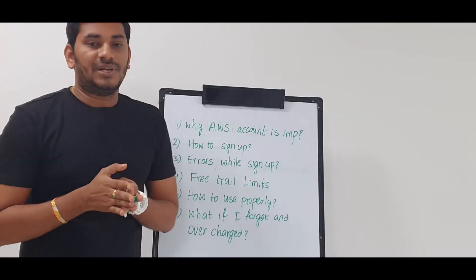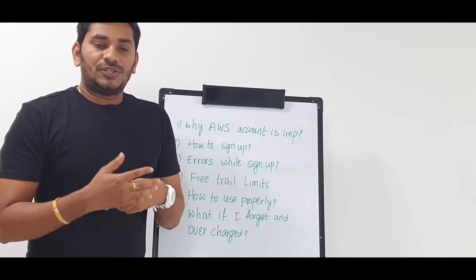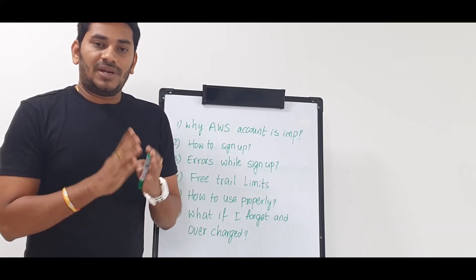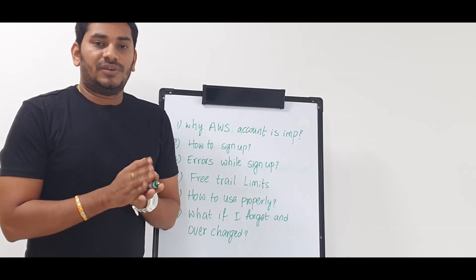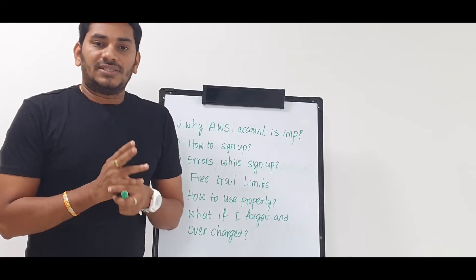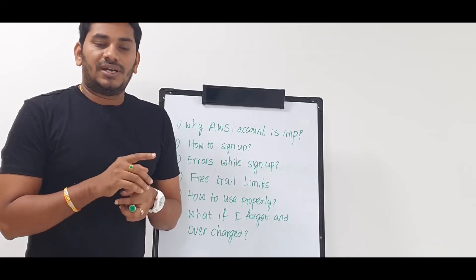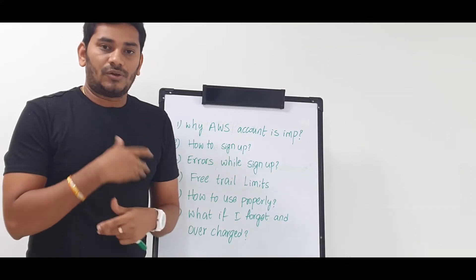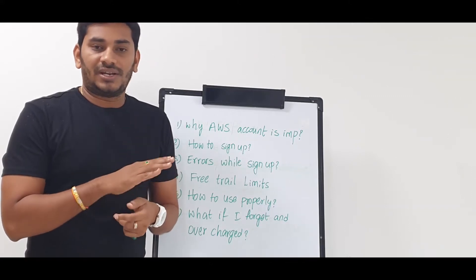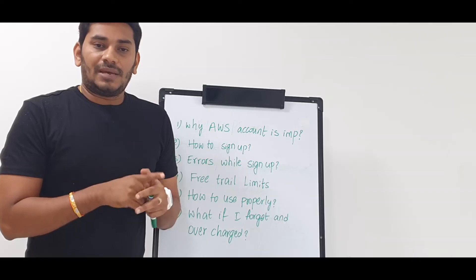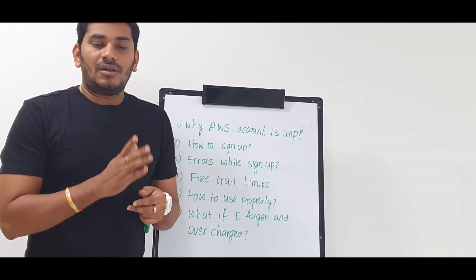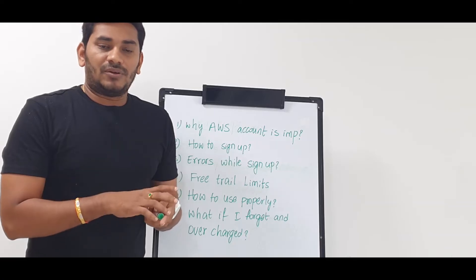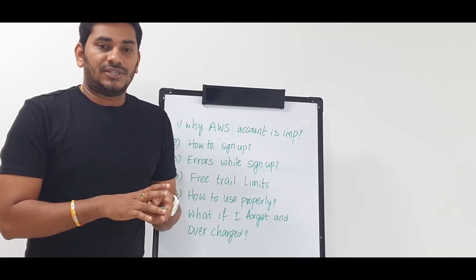Regarding Free Trial Limits: the AWS account is free for one year, but not everything is free. There is limited usage. For example, you get a server for 750 hours — that means about 31 days of continuous running. You can use 1GB RAM. If you exceed 1GB RAM, you don't have free trial coverage. If you create a database, use the least instance type; otherwise you won't have free trial coverage.